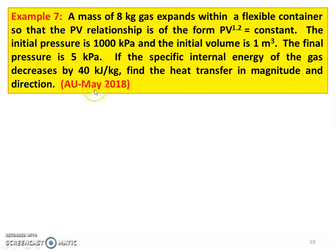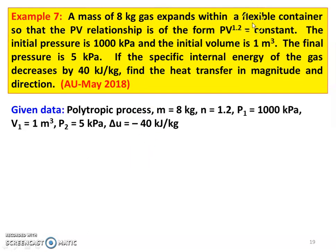Next question, Example number 7, from the May 2018 question paper. A mass of 8 kg of gas expands within a flexible container so that the PV relationship is of the form PV to the power 1.2 equal to constant. The initial pressure is 1000 kilopascal and initial volume is 1 meter cube. The final pressure is 5 kilopascal. The specific internal energy of the gas decreases by 40 kilojoules per kilogram. Find the heat transfer in magnitude and direction. This is a polytropic process with N equal to 1.2. Given: mass equal to 8 kg, P1 equal to 1000 kPa, V1 equal to 1 m³, P2 equal to 5 kPa, delta U equal to minus 40 kJ/kg.